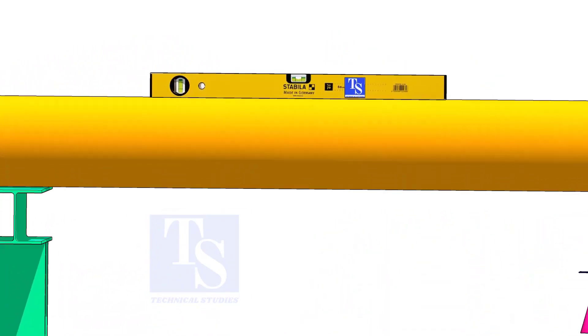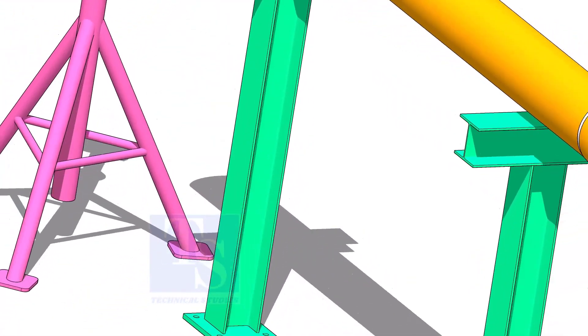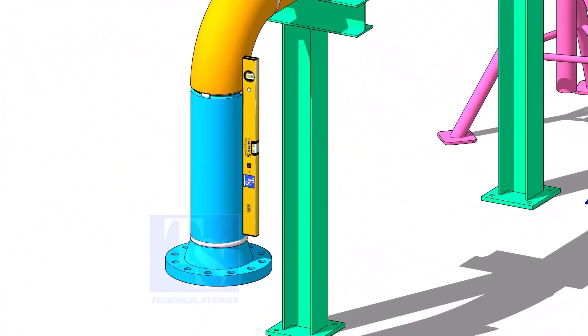Rotate spool number two vertically, as shown, and level the pipe. This position will ease the fitup of spool four.